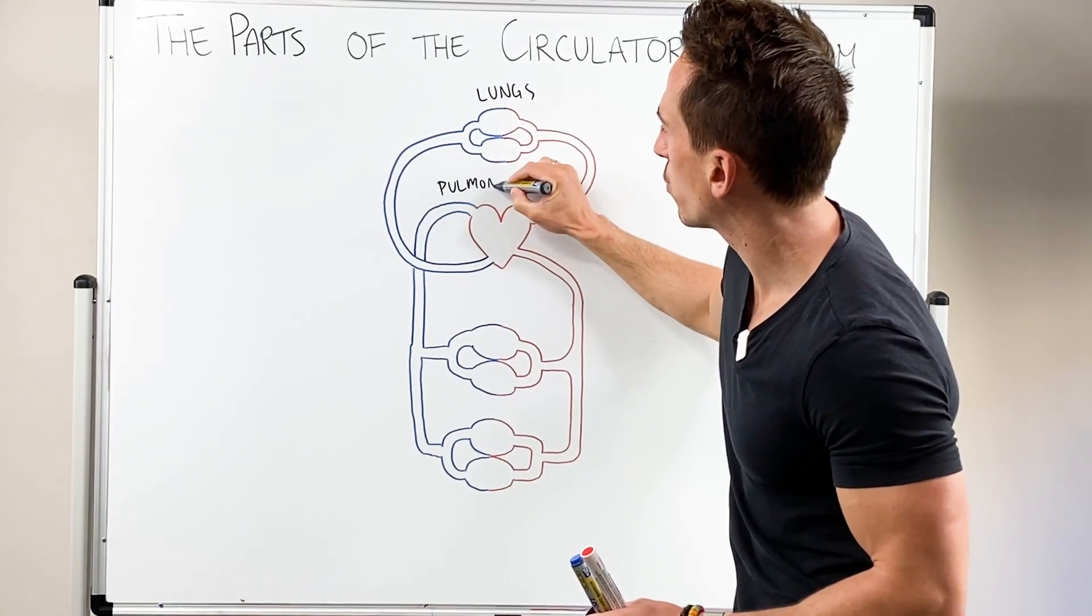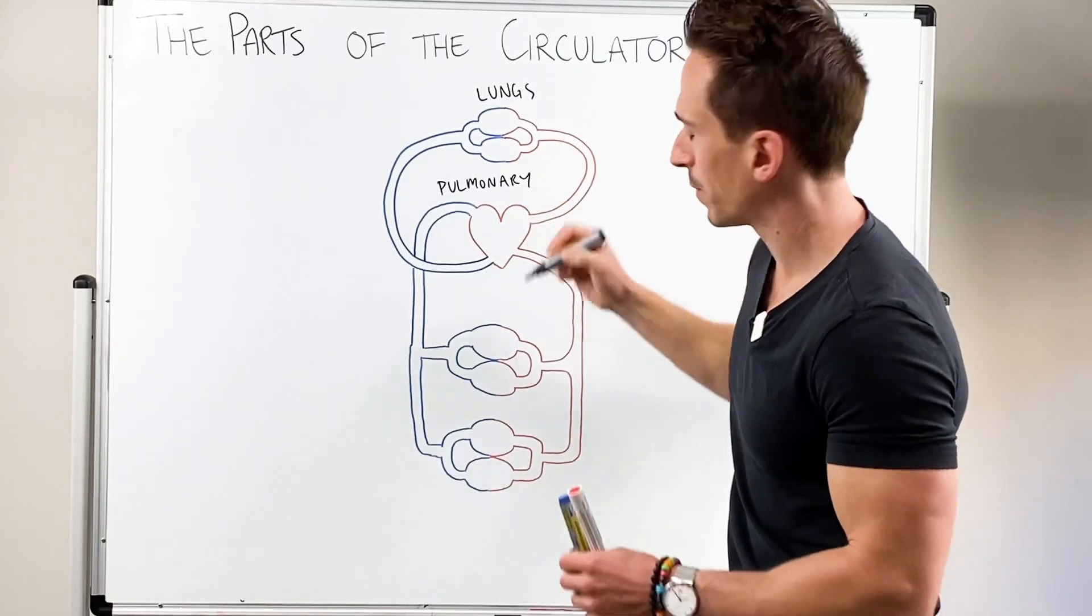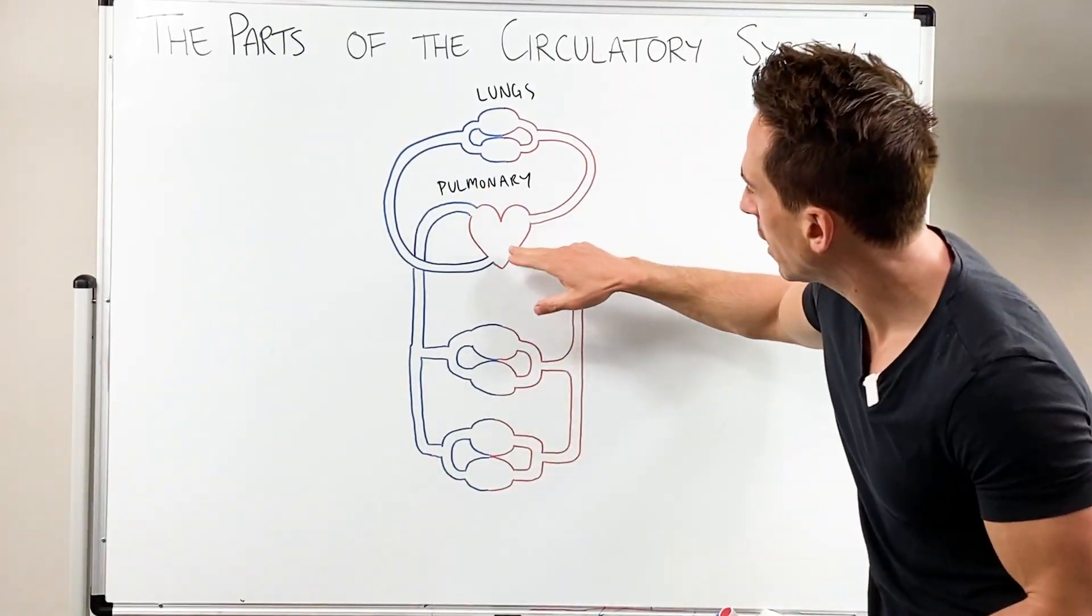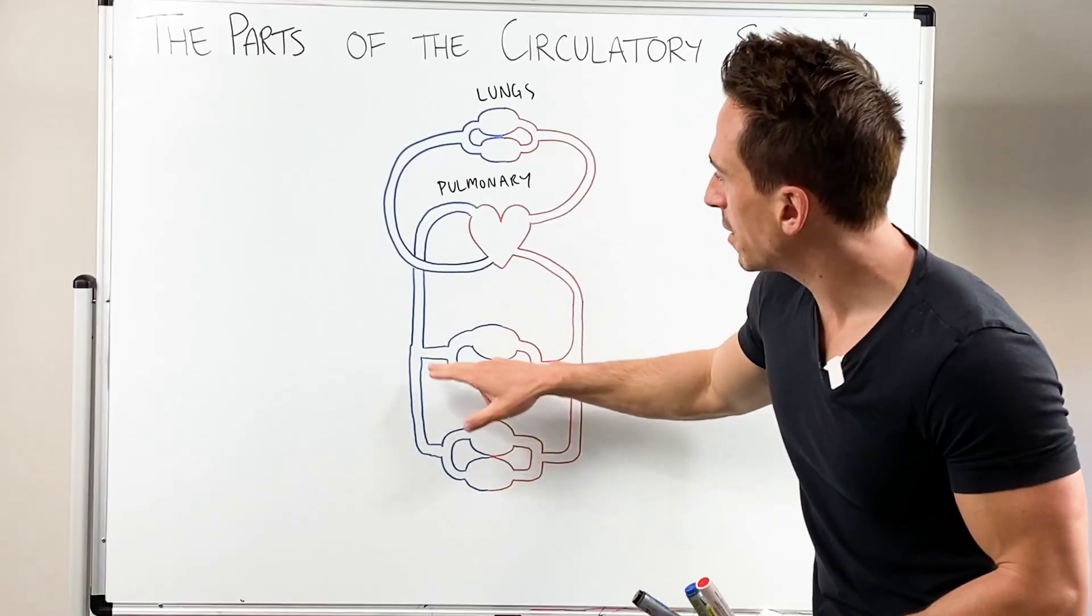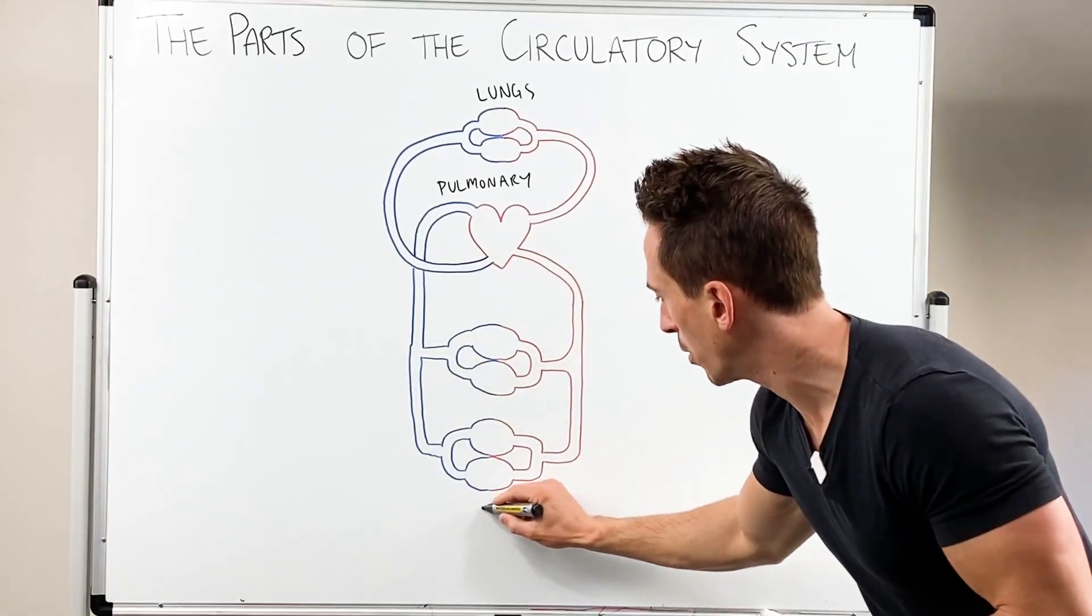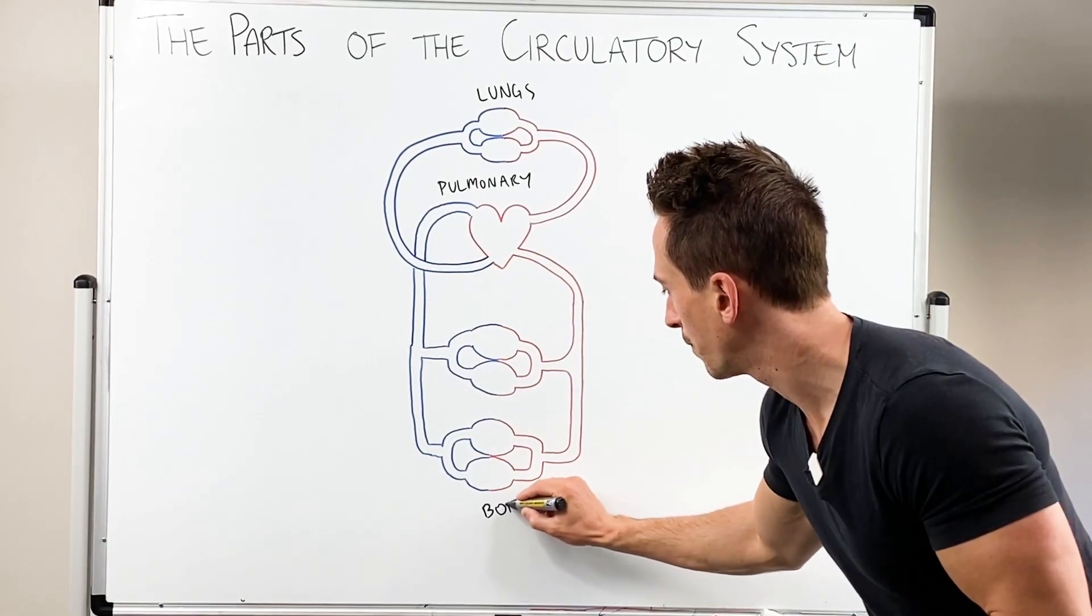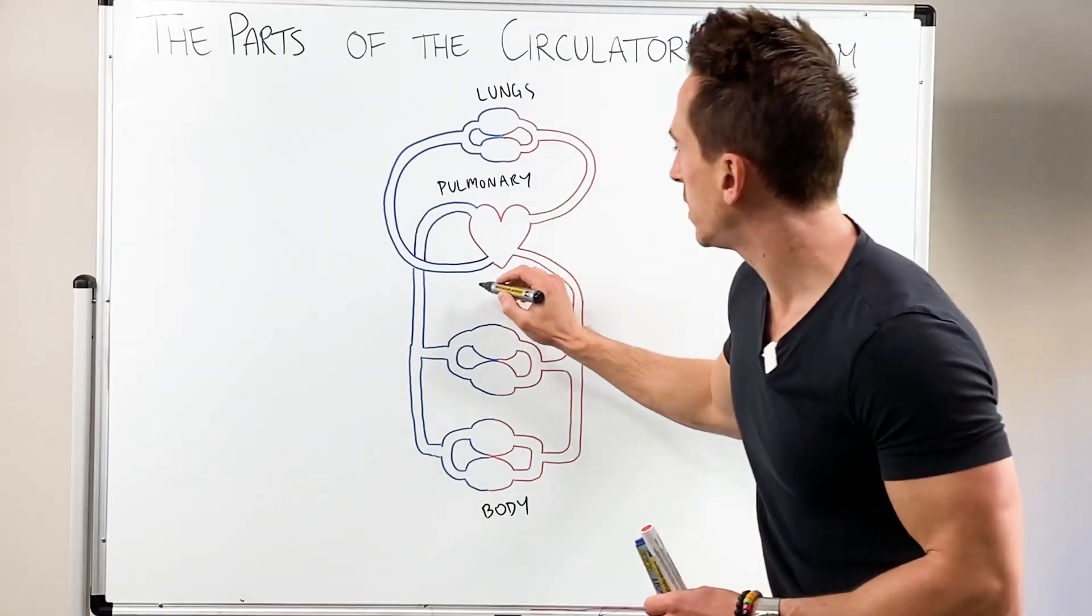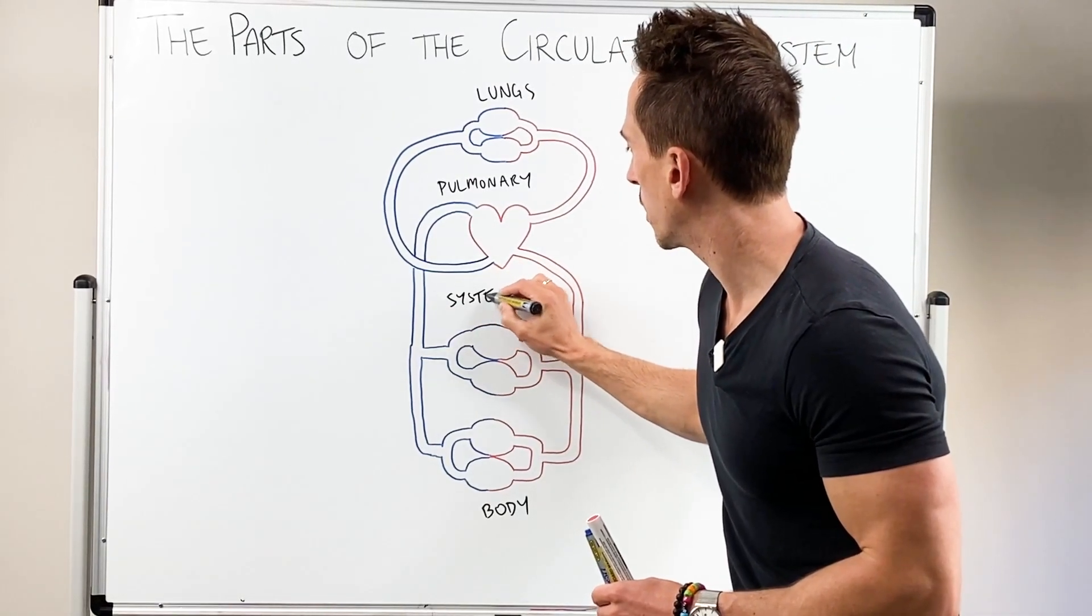So pulmonary is referring to lungs. And the other type of circulation is going from the heart through to the body and then back to the heart again. So let's write body down here. And this is called the systemic circulation.